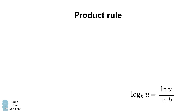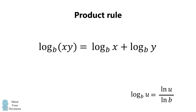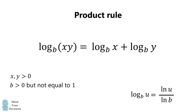Recall the product rule of logarithms. Log base B of the product XY is equal to log base B of X plus log base B of Y. All of the numbers are greater than 0, and the base B is not equal to 1.